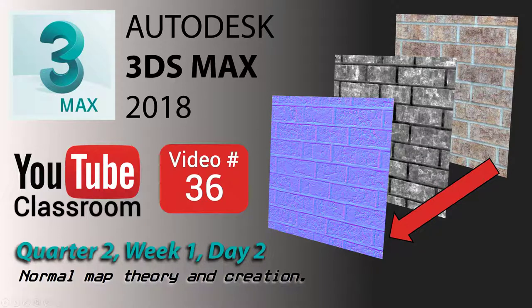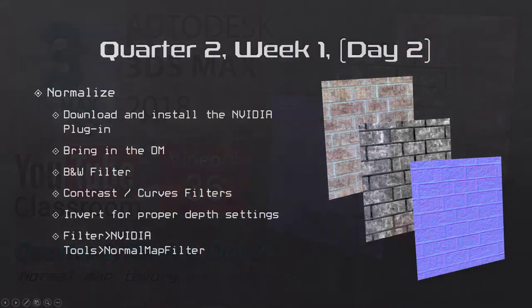Today is day two — "Why Can't You Be Normal" — so we're going to start with the image we ended with yesterday. We're going to convert it to black and white and do a little more work to make sure the normal map comes out looking just the way we want. We'll talk about settings and everything you'll need to use your normal map in 3D Studio and ultimately in Unreal Engine. Today we'll download and install the NVIDIA plugin for Photoshop, bring in the diffuse map, activate a black and white filter, adjust contrast and curves, invert it for depth settings, and apply the NVIDIA Tools Normal Map filter.